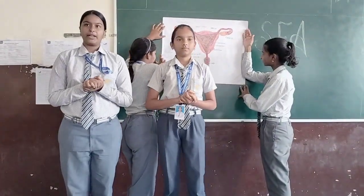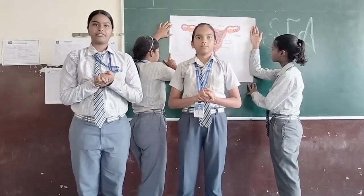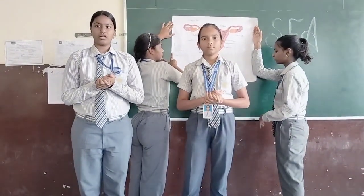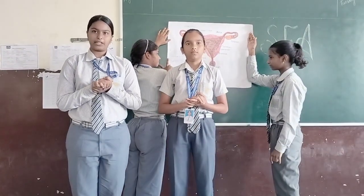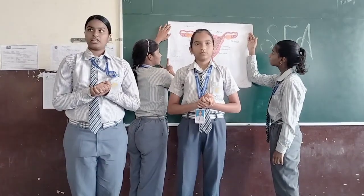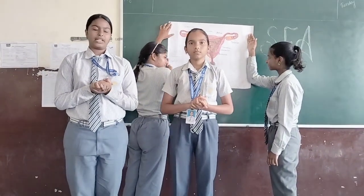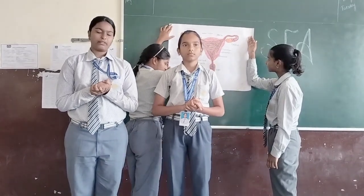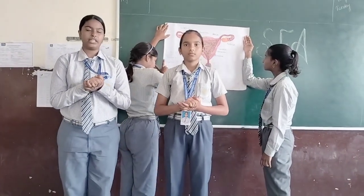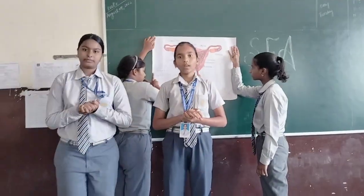Ovarian ligament: it connects each ovary to the lateral side of the Uterus. It does not contain any blood vessels. Cervix: the lower narrow end of the Uterus that forms a canal between the Uterus and Vagina.